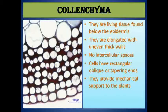Collenchyma tissues are living tissues found below the epidermis. The epidermis is the outer protective layer of the plant tissues. These collenchyma tissues are located just beneath or inside the epidermis. They are elongated with uneven thick walls — the walls of the collenchyma are not even in thickness. There are no intercellular spaces between the adjacent cells.